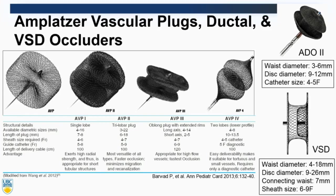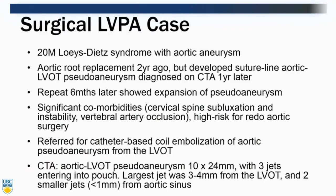Various vascular plugs can be used: AVP2, ADO2, and VSD occluders. There are also other approaches aside from occluders. One such case involved a 20-year-old with Loeys-Dietz syndrome and aortic aneurysm who had an aortic replacement two years prior but subsequently developed an LVOT pseudoaneurysm.